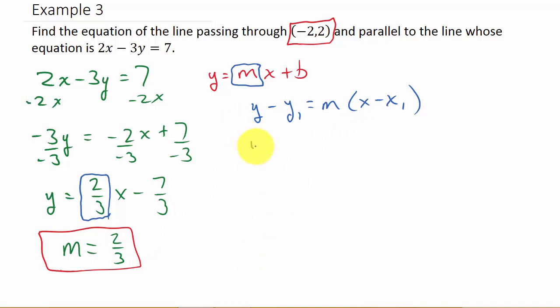Alright, so I've got y - y₁. So y - 2 = 2/3 times (x - (-2)). Well, minus a negative 2, that would be plus 2. Remember, x minus negative 2. The two minuses make the plus.